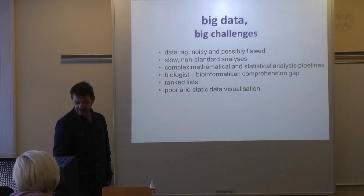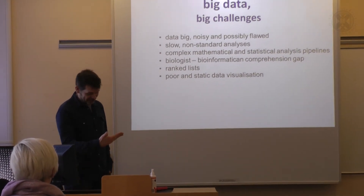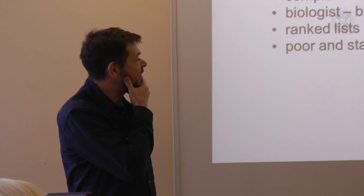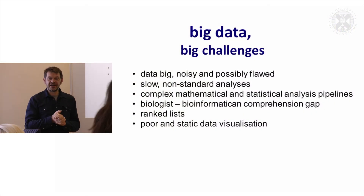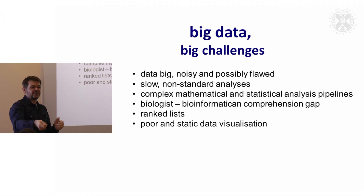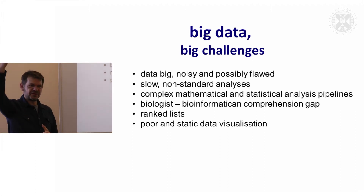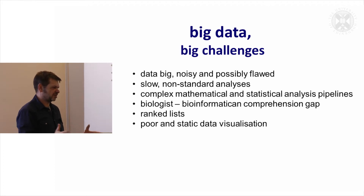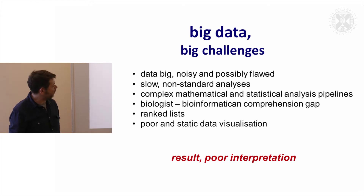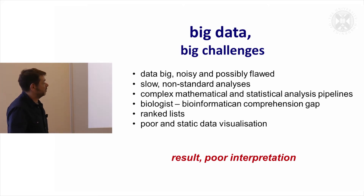This comes down to complex and often very statistical pipelines. Sometimes I read papers and I have no idea what they did — you read what they did, look at the answer, and think 'I don't quite know what they did here and I don't believe their answer.' Quite often what you get back is a ranked gene list: you do a statistical analysis and rank it by p-value or fold change. That's a false way of looking at data because it assumes the biggest change with the biggest significance is the most interesting, which is not the case. On top of this, there are poor and static visualizations.